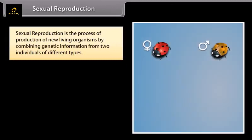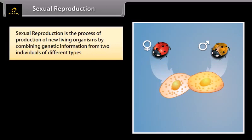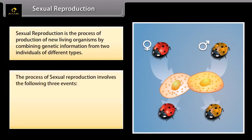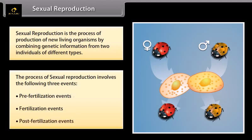Sexual reproduction is the process of production of new living organisms by combining genetic information from two individuals of different types. The process of sexual reproduction involves three events: pre-fertilization events, fertilization events, and post-fertilization events.